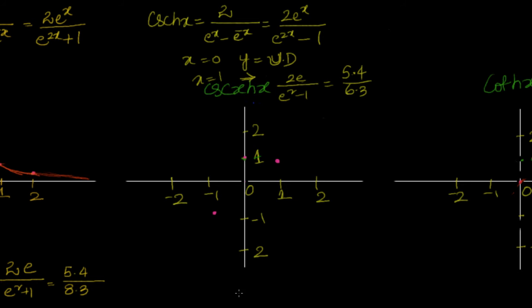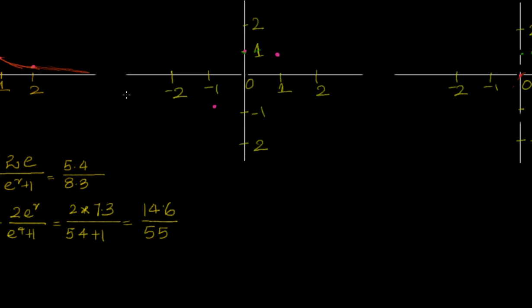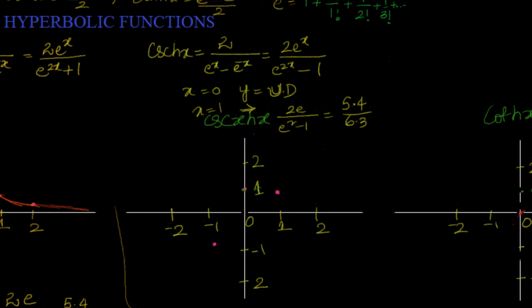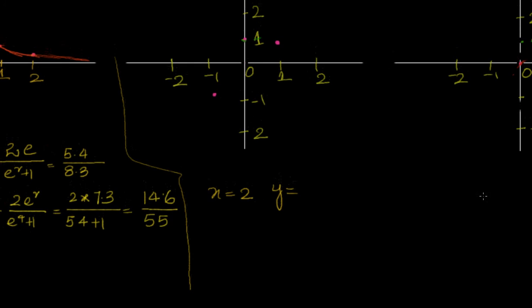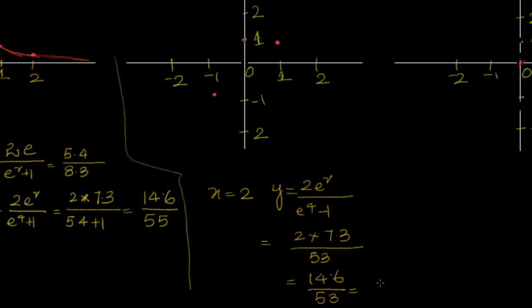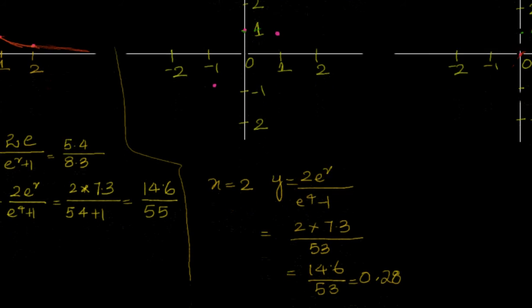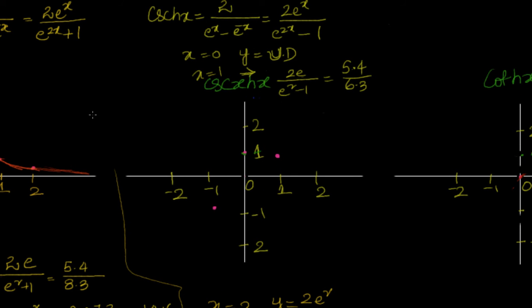For x equal to 2, y equals 2e^2 by (e^4 - 1), that is 2 times 7.3 divided by 54 minus 1, which is 14.6 by 53, approximately 0.275. So at x equal to 2, y is approximately 0.28, showing we are approaching 0.